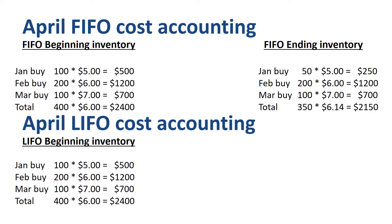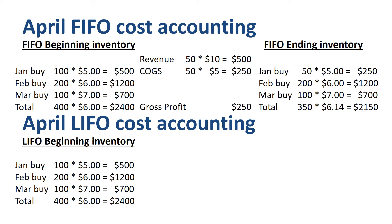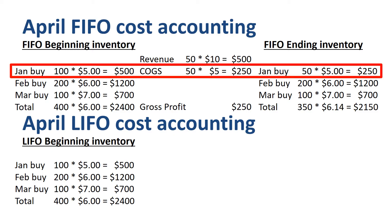If we prepare the income statement for April under FIFO: revenue is 50 units times $10 = $500; cost of goods sold (COGS) is 50 units times $5 = $250; and gross profit is $250. Out of the January buy that was part of the beginning inventory, 50 units go to COGS and 50 units go to the ending inventory.